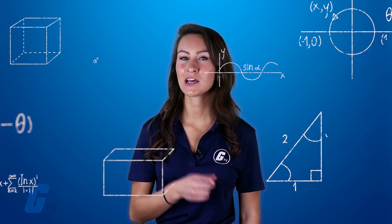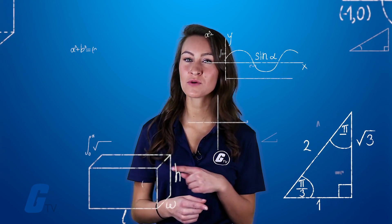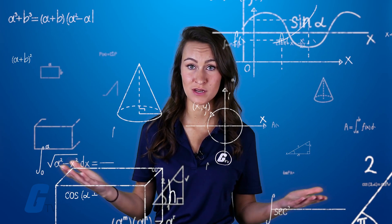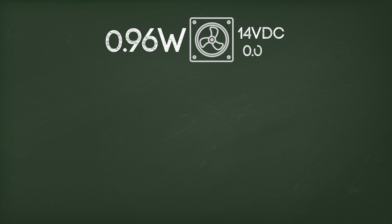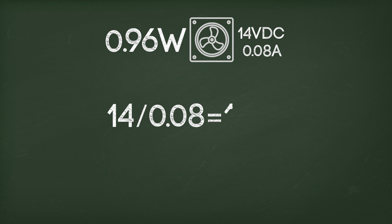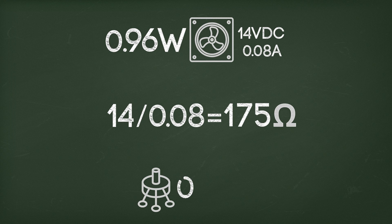If you know the circuit's voltage and current, remember back to high school algebra that you can flip around the formula to divide voltage by the current. Say you have a 0.96 watt computer fan that operates on 14 volts DC with 0.08 amps. 14 divided by 0.08 would give you a resistance of 175 ohms. That tells you the nominal resistive value of the potentiometer you need with at least 0.96 watts of power.